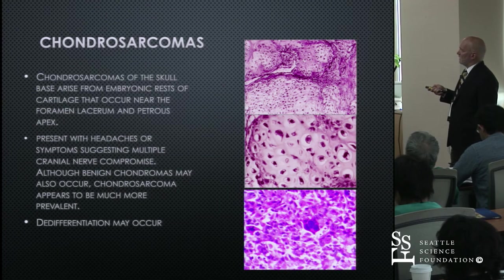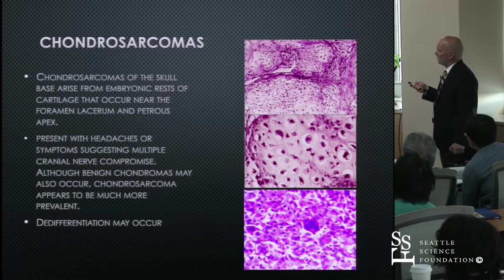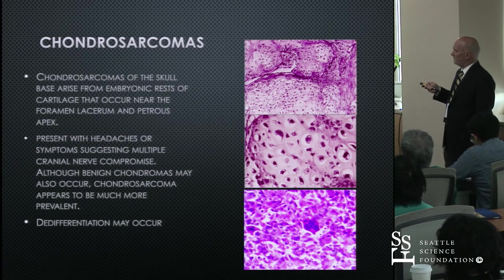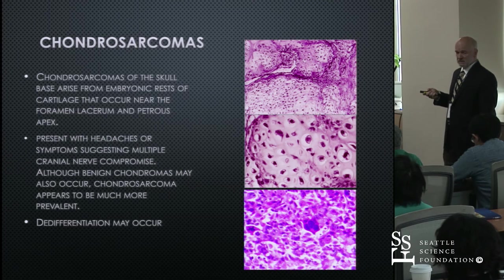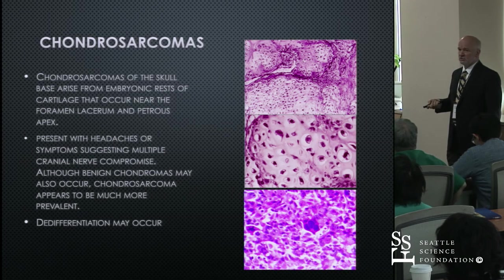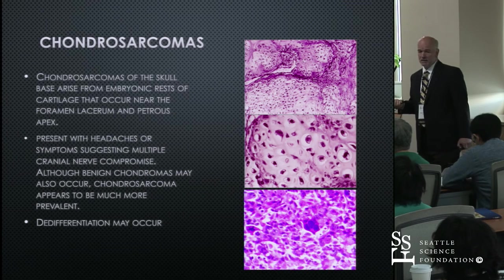Chondrosarcomas arise from cartilaginous rests in this location and are graded depending on cellularity, atypia, and mitotic activity. You can see this chondroid-like, hyalinized matrix identifying a chondrosarcoma with nuclear polymorphism — this would be a grade 2. With time, chondrosarcomas tend to de-differentiate as they accumulate mutations and can progress to a high-grade chondrosarcoma.